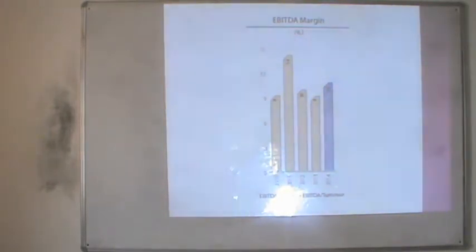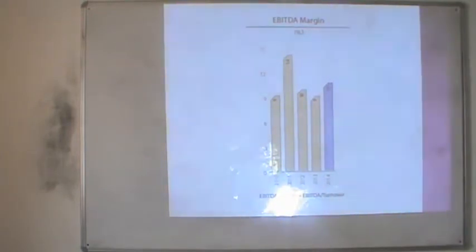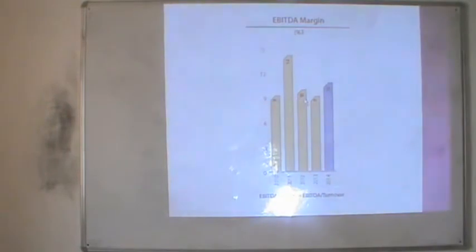The next item is the EBITDA margin — the gross profit margin of the company. This margin has shown a similar flow over the last 5 years, except in 2011 where it increased to 14%; otherwise it is close to 9%, 10%, or 11% in the remaining years.